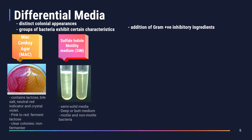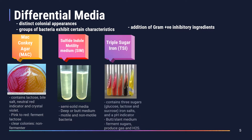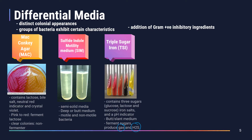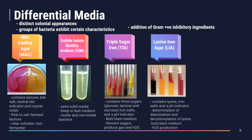Most differential media are used to isolate gram-negative bacteria through the addition of ingredients inhibitory to gram-positive organisms. An example is triple sugar iron agar (TSI), which contains three sugars — glucose, lactose, and sucrose. TSI primarily differentiates bacteria on their ability to ferment these three sugars and identifies organisms that produce gas and hydrogen sulfide during fermentation. Gas is observed by cracks or bubbles in the butt, while hydrogen sulfide is indicated by a black precipitate.